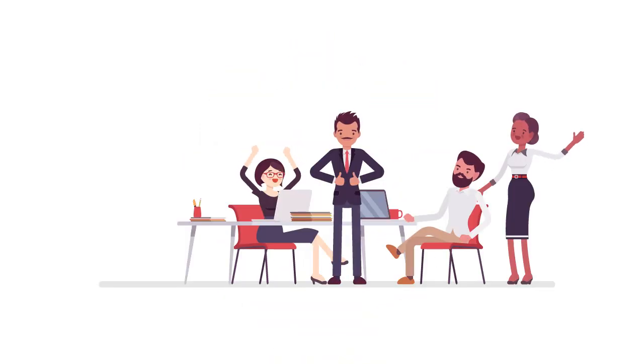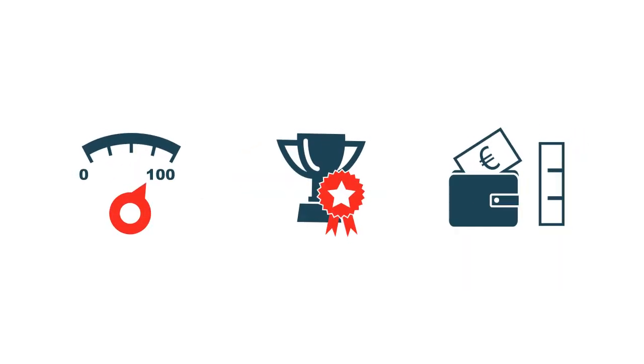The standard is based around a three-step process, creating a framework for continuous improvement. To achieve it, organisations need to provide evidence that they are accurately measuring their impact, managing it effectively and successfully working towards real reductions on an ongoing basis.